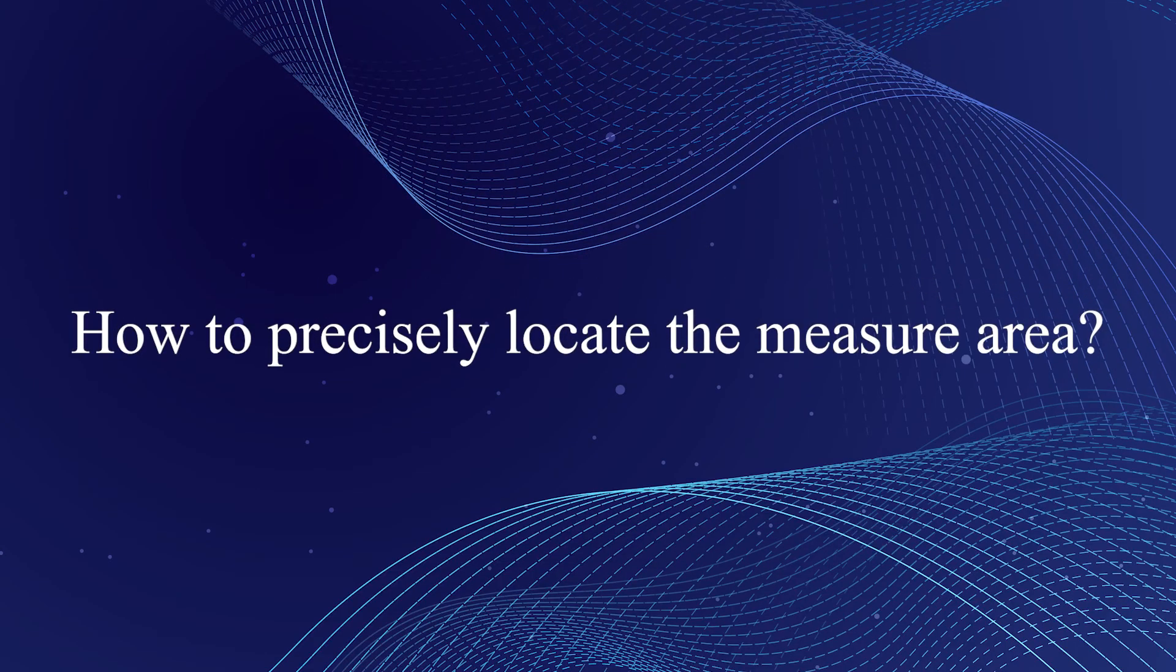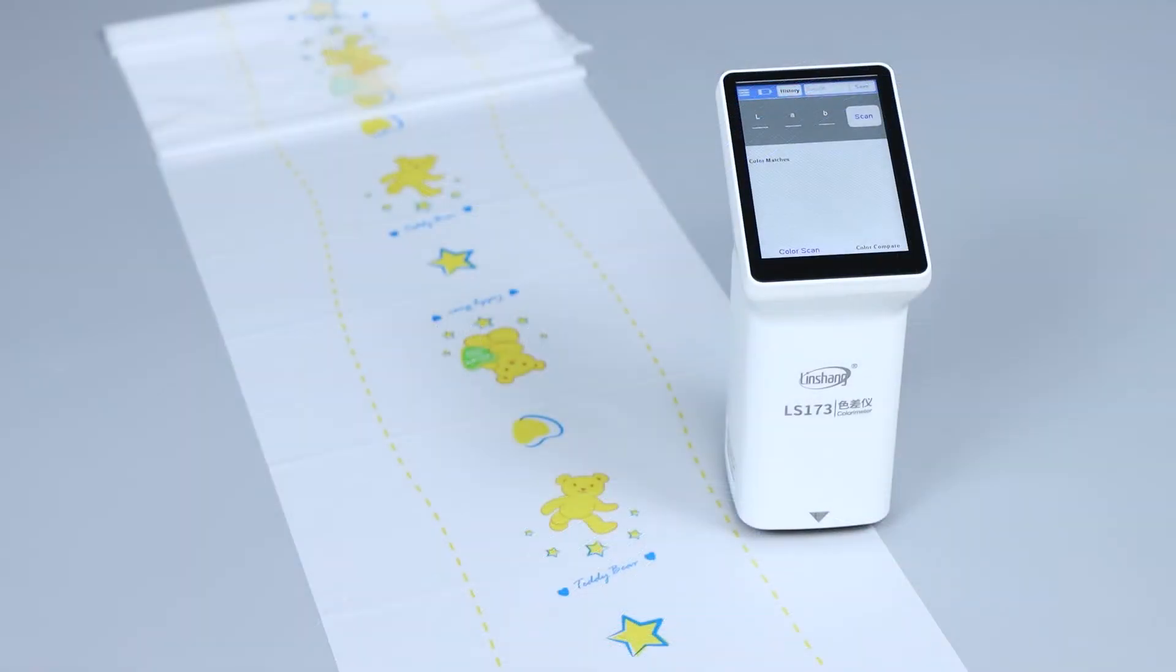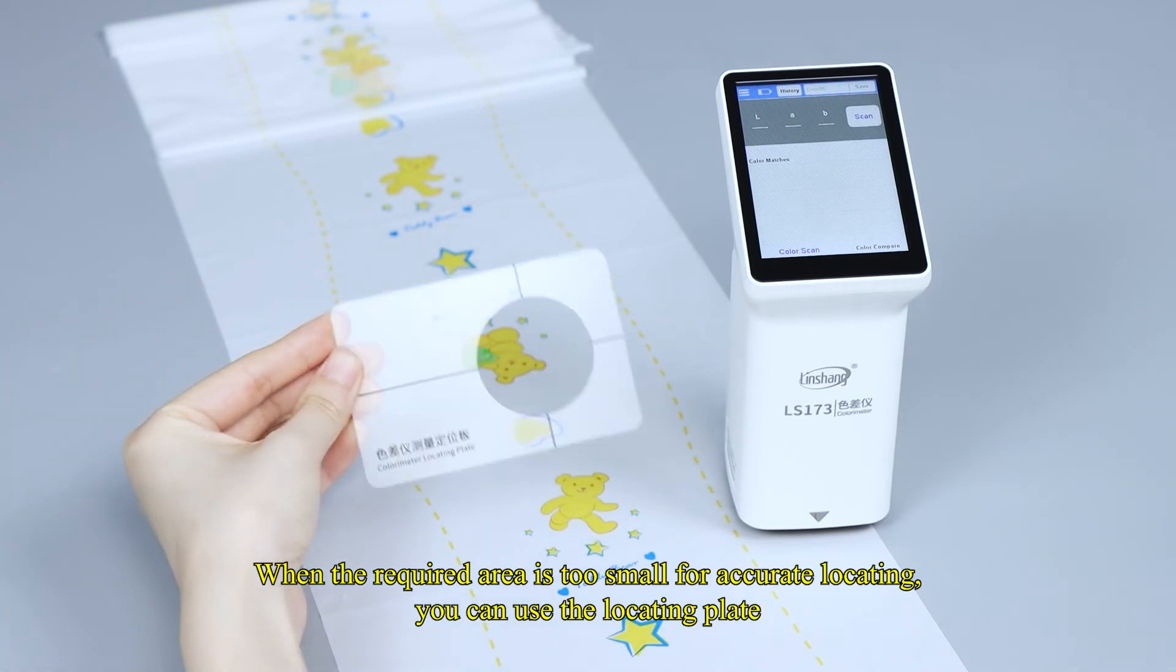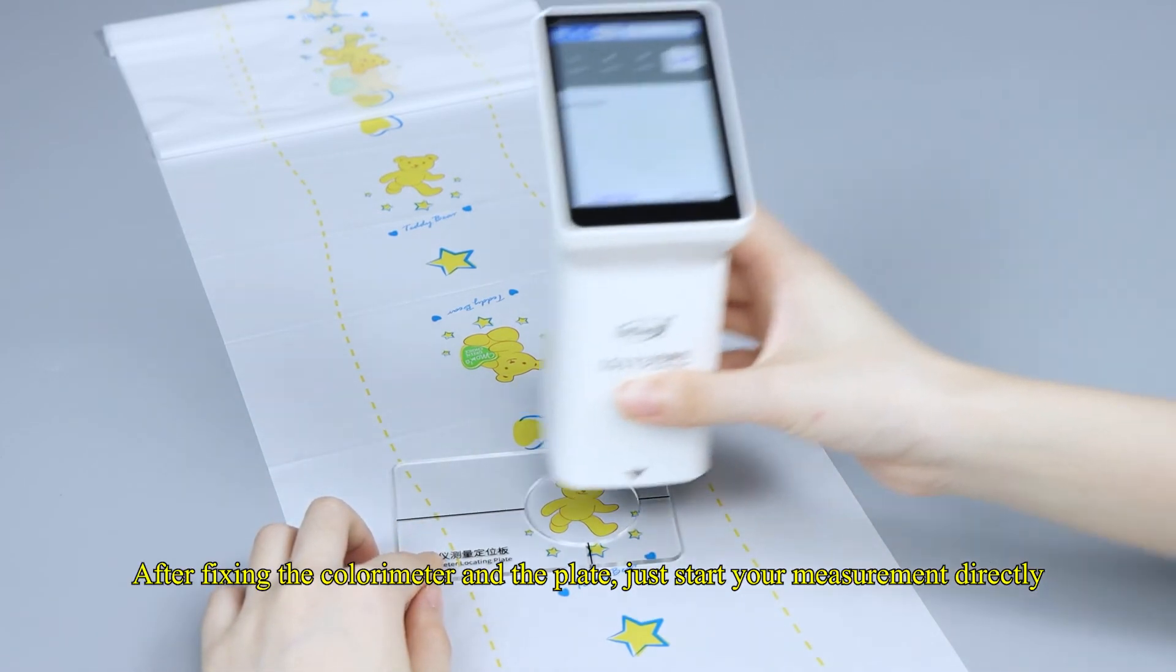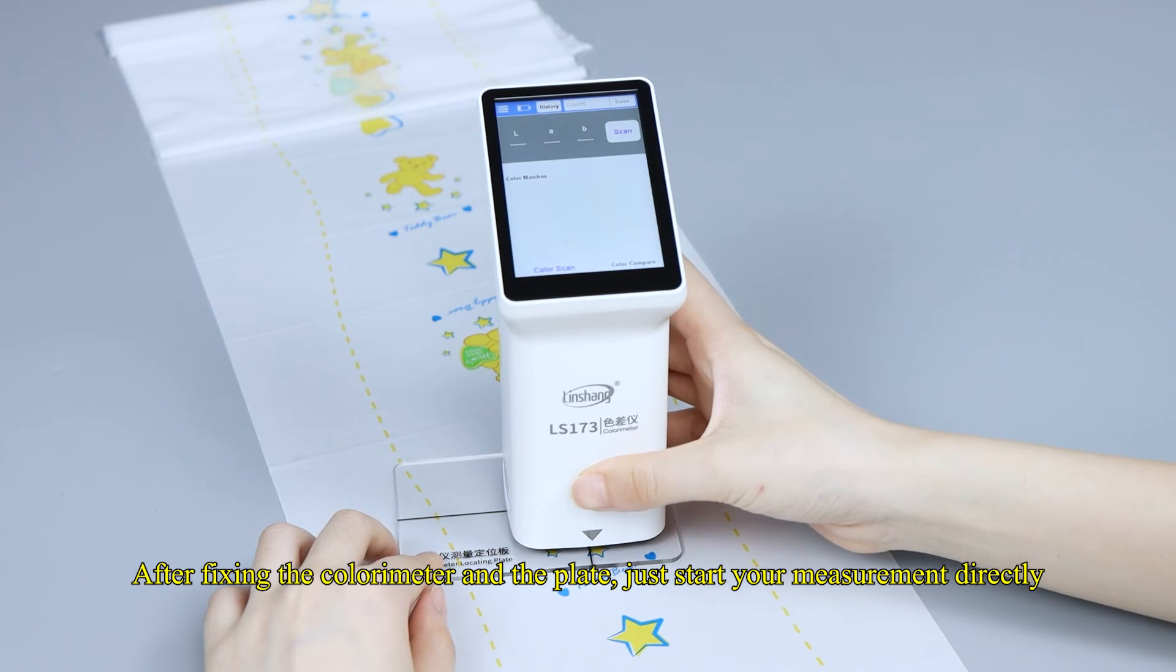How to precisely locate the measure area. When the required area is too small for accurate locating, you can use the locating plate. After fixing the colorimeter and the plate, just start your measurement directly.